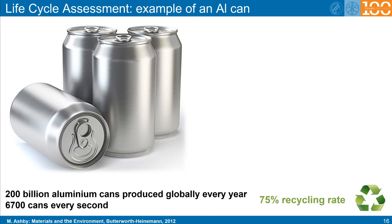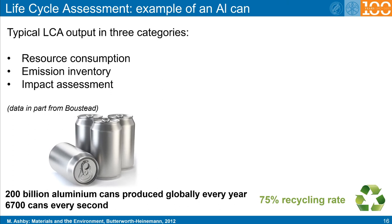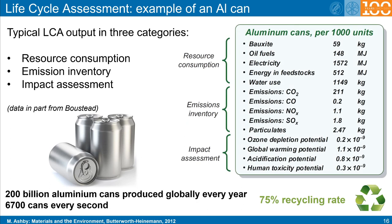The aluminium can is a nice example for a life cycle assessment. 200 billion aluminium cans are produced globally every year, which translates to 6,700 cans produced every second. For 1,000 cans, the life cycle assessment shows all the resources that have been consumed. It becomes apparent that particularly the huge consumption of electricity is a high burden. Currently, 2% of the world's energy use is spent on producing aluminium.